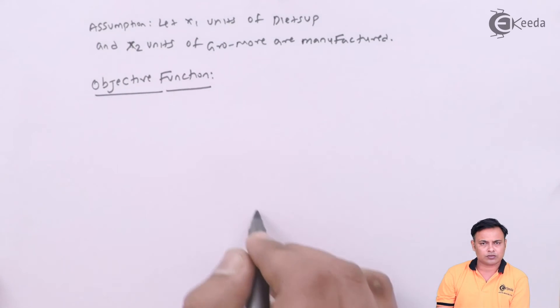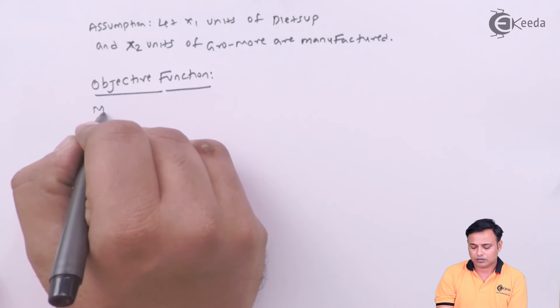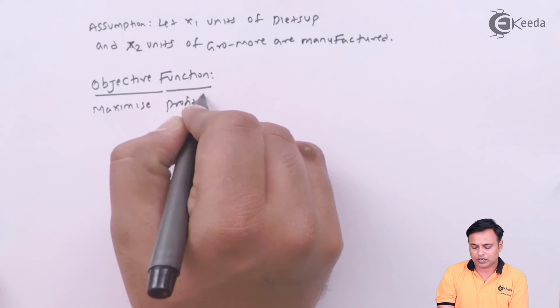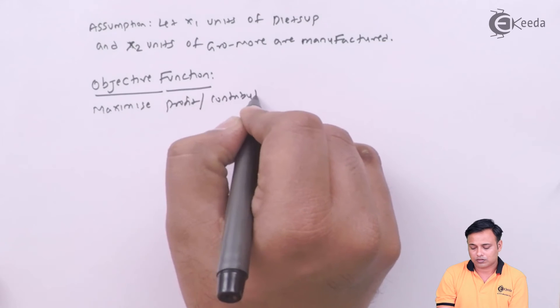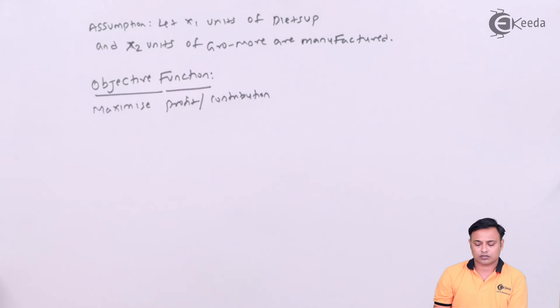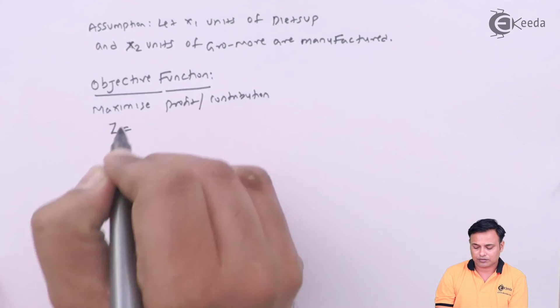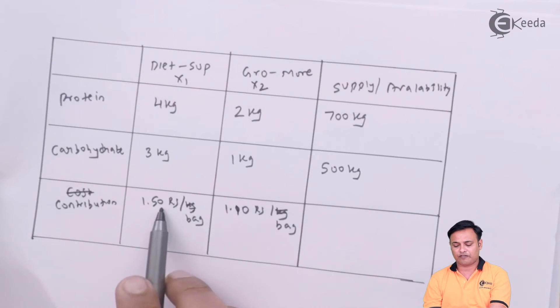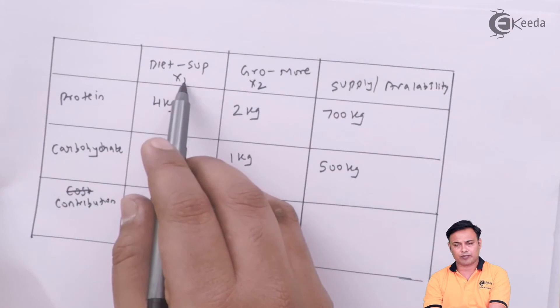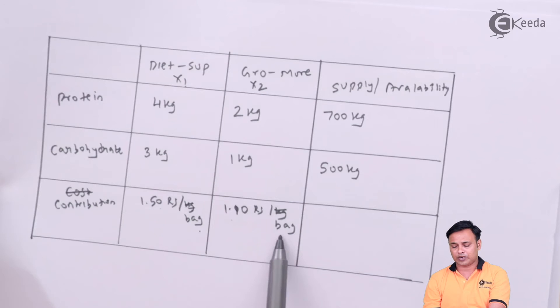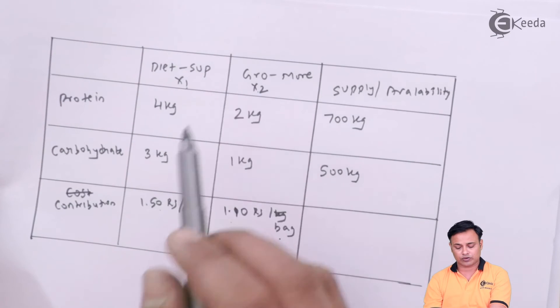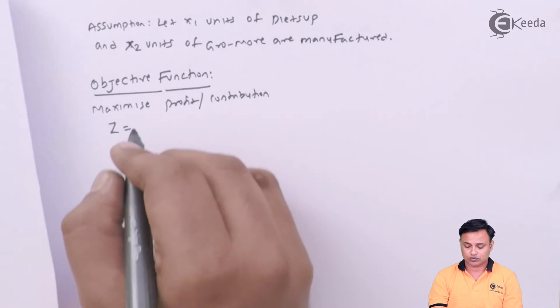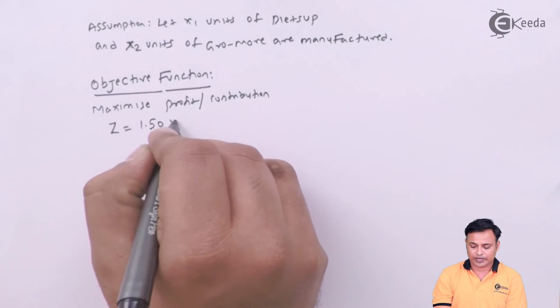Now my objective function will be to maximize the contribution or maximize the profit. So maximize the profit or contribution, denoted by Z, should be equal to how much is my contribution per bag. It is $1.50 per bag multiplied by x1 bags, and for Gro-More it is $1.10 per bag multiplied by x2 bags. So it will be 1.5 times x1 plus 1.10 times x2.